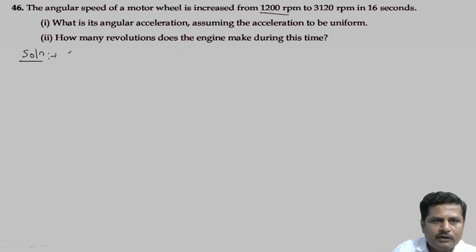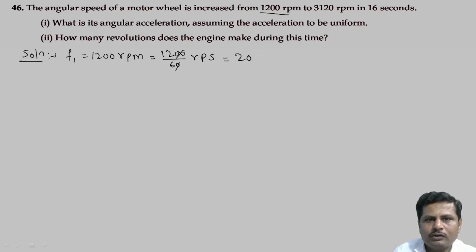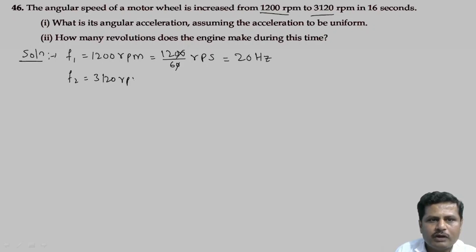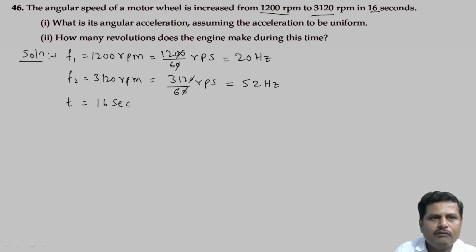We have initial frequency f1 equals 1200 rpm. Always express in SI units, that is revolutions per second: 1200 divided by 60 equals 20 rps, which is 20 Hertz. Final frequency f2 equals 3120 rpm, that is 3120 divided by 60 equals 52 Hertz. Time t equals 16 seconds. We need to find the angular acceleration.